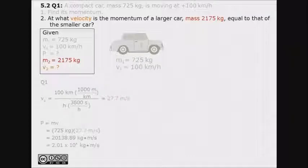Part 2 of the question asks, at what velocity is the momentum of a larger car with a mass of 2175 kg equal to that of the smaller car. The given box contains the color-coded information from the question.